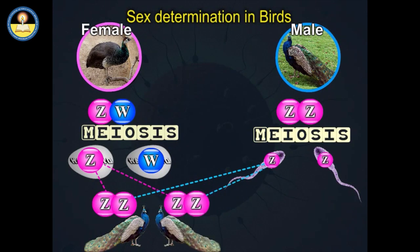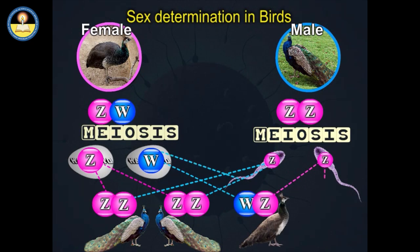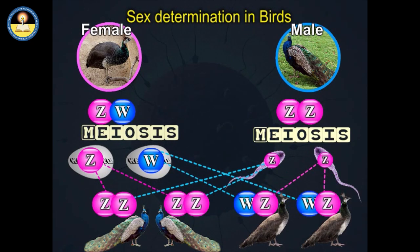Ovum containing the Z chromosome unites with the sperm having the Z chromosome to produce a ZZ zygote, which develops into a male. When the ovum containing the W chromosome unites with the sperm having the Z chromosome, it produces a ZW zygote, which develops into a female.